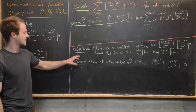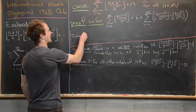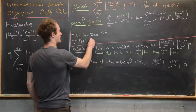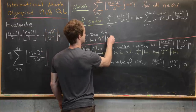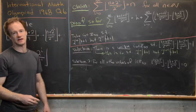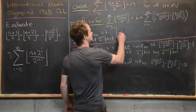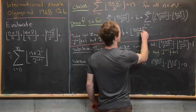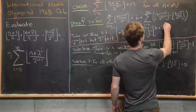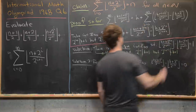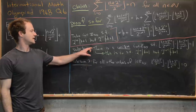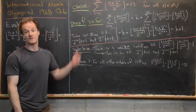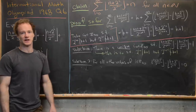Now we're ready to finish. Using subclaims 1 and 2, take i₀ such that 2^(i₀) | k+1 but 2^(i₀+1) ∤ k+1. All other terms in the sum contribute 0, and the i₀ term contributes 1. So the k+1 case equals k + 1, completing the inductive step and finishing the proof. The closed form of the sum is n.